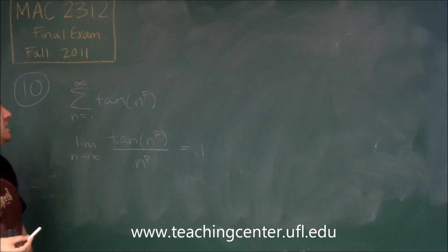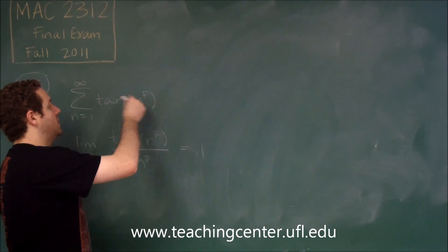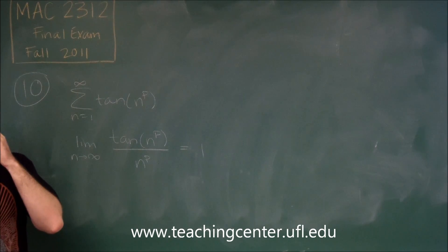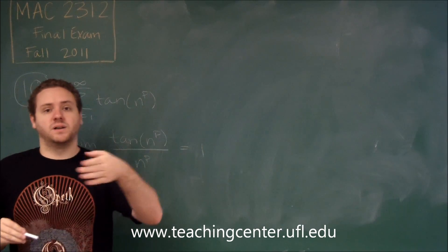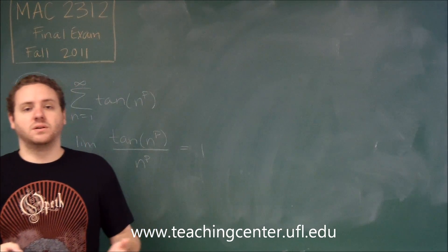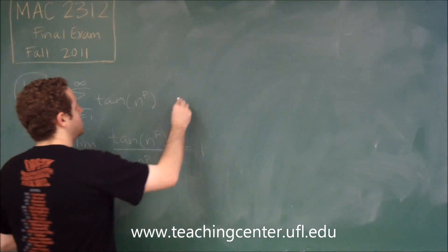You can see here that if p is 0, we would get just tangent of 1. Tangent of 1 is a constant, and if you just summed up a constant, you would never converge. So p equals 0 certainly can't work.